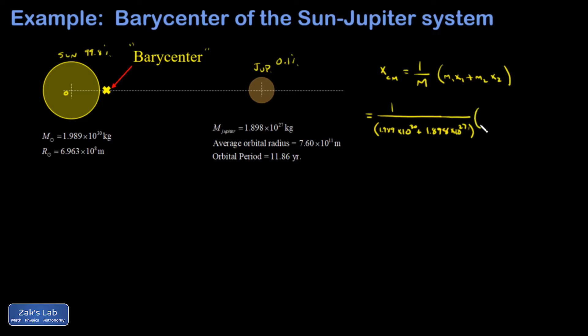And then I'm going to plug in my m1x1 plus m2x2. So I'm referring to the Sun as m1 here. Jupiter is m2. And notice that the x-coordinate of the Sun is 0. It's sitting right on the origin just because we defined the origin there. And that means I don't even have to write that term. So I'm just going to write the Jupiter term.